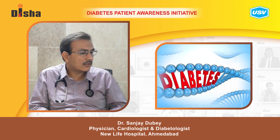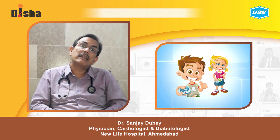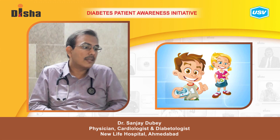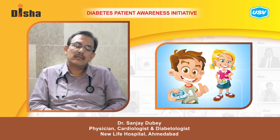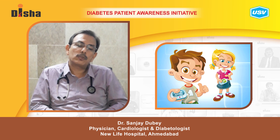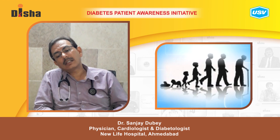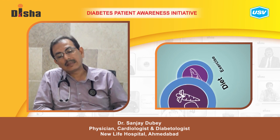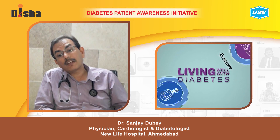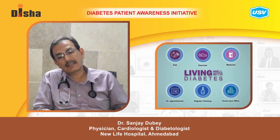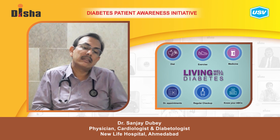Can one reduce the risk of having diabetes in the next generation? Can one reduce the chances of diabetes in children? Yes, one can, to some extent, because we cannot change the genetic abnormality. But if you control diabetes through reducing weight, healthy diet, good environment, and reduction of stress, one can definitely reduce the risk of diabetes in the next generation.